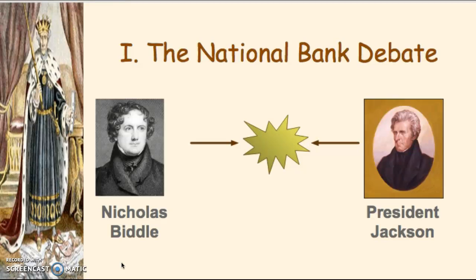With Jackson in office and the 1832 election underway, the National Republicans pushed early rechartering knowing Jackson would probably veto it. Their hope was to override his veto or swing it through, making it a big national issue that would make Jackson look bad. Jackson, of course, vetoed the rechartering of the National Bank, declaring it unconstitutional, calling it a monopoly run by the rich, and claiming it was run by foreign investors — capitalizing on anti-immigrant sentiment — though that last claim wasn't necessarily true. His focus was to end the bank entirely, not reform it.